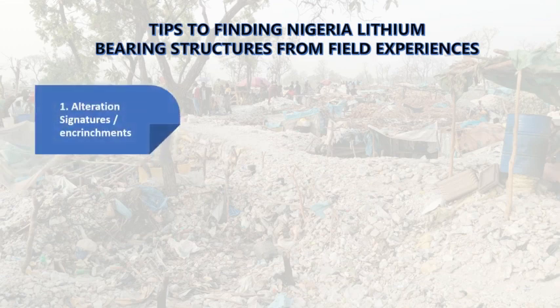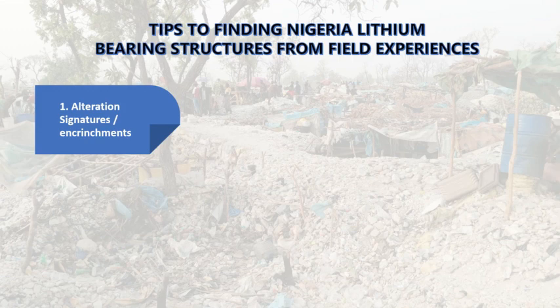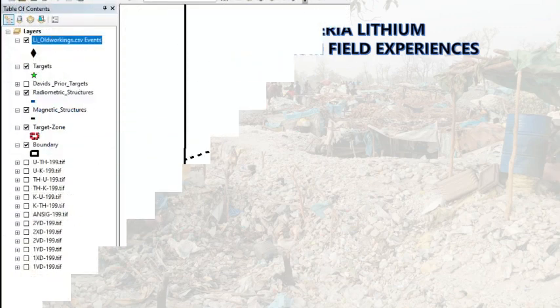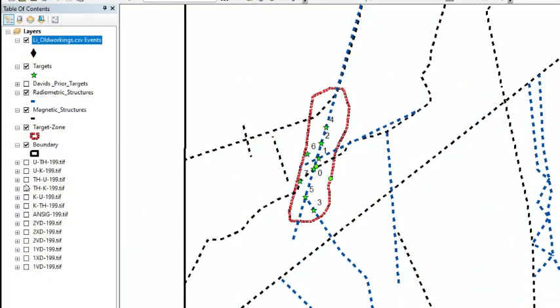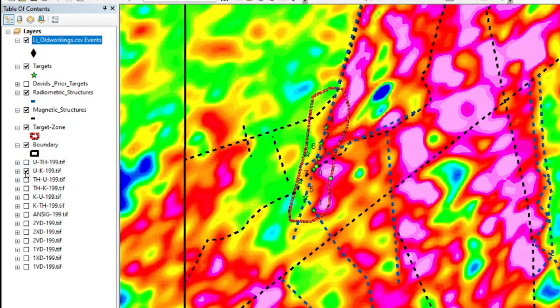Now, going to the tips. Tip number one: you need to look at alteration signatures. When talking about alterations remotely, you can look at alteration regionally by combining radiometric data, magnetic data, and other remote sensing data like ASTER images. You'll be able to find out where the alteration signatures are. If you are used to finding these minerals, you'll see the alteration signatures are very unique.